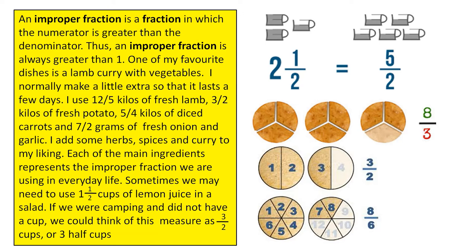I use 12 over 5 kilos of fresh lamb, 3 over 2 kilos of fresh potato, 5 over 4 kilos of diced carrots, and 7 over 2 grams of fresh onion and garlic.